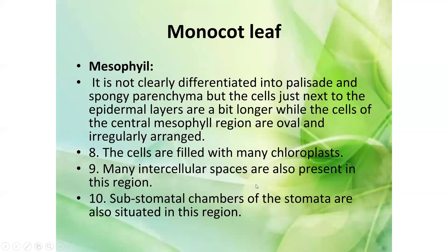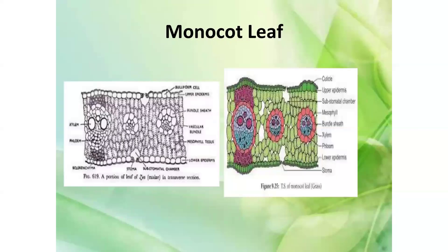The mesophyll tissue of the monocot leaf is not clearly differentiated into palisade and spongy parenchyma. Cells just next to the epidermal layers are somewhat longer, while cells of the central mesophyll region are oval and irregularly arranged. The cells are filled with chloroplasts, and many intercellular spaces and substomatal chambers are present in this region.